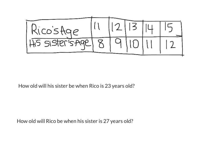So to figure out how old his sister will be when Rico is a given age, all we have to do is subtract 3 from whatever Rico's age is. So if Rico is 23 years old, we can figure out how old his sister is by subtracting 3. 23 minus 3 equals 20. So his sister will be 20 years old when Rico is 23.